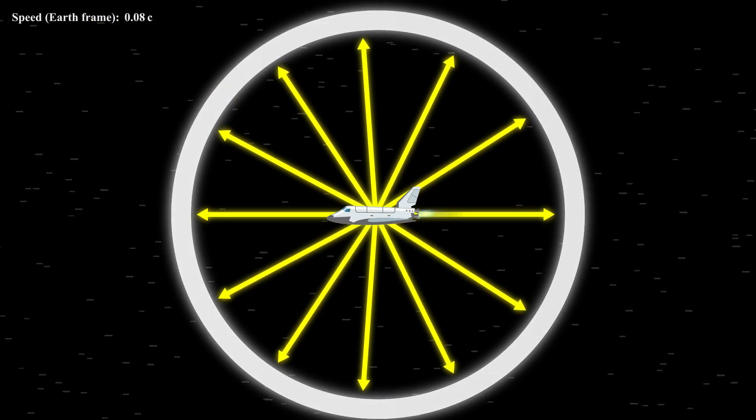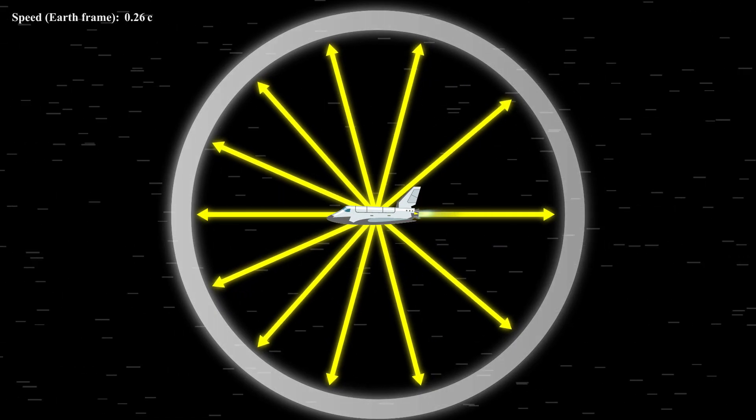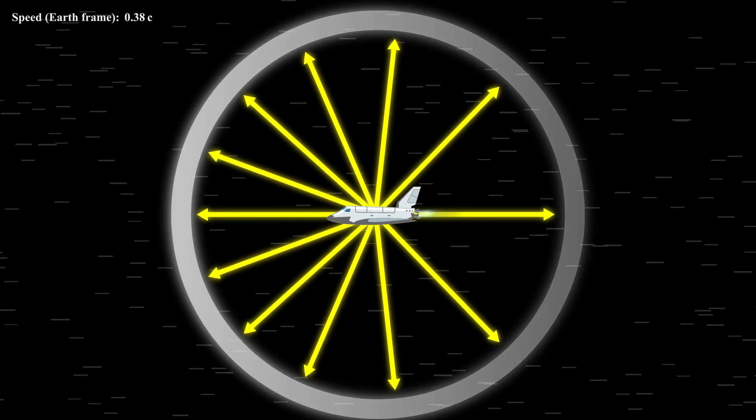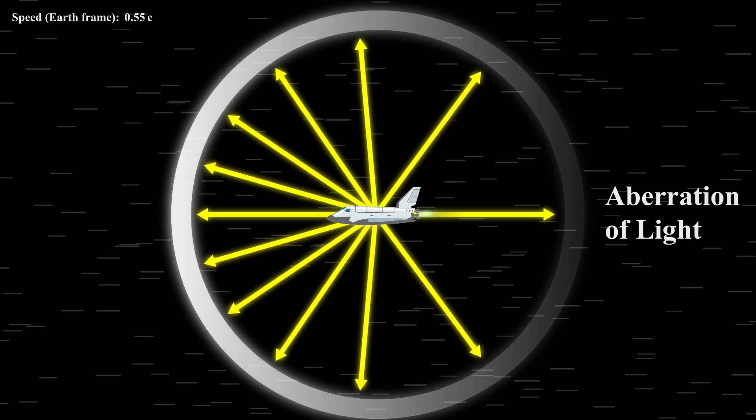By applying this to light rays from all directions, we find they appear angled from the front, making the universe visually contract ahead of us. This effect, called the aberration of light, becomes more pronounced as we accelerate.